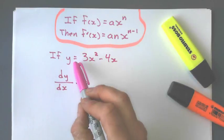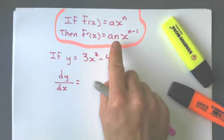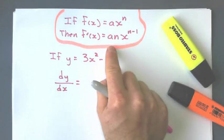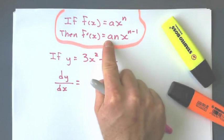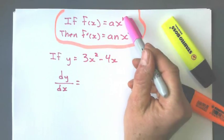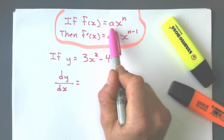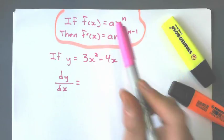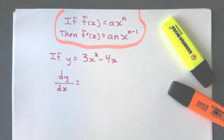So if there is a coefficient, meaning a number in front of the x, nothing changes except we just multiply that exponent we brought down in front of it to the coefficient. Okay? So we still take the exponent, bring it down, multiply it to the coefficient, and go from there.